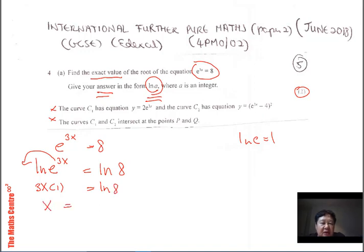So therefore, x is what? The 3 brings over will be ln 8 divided by 3, or 1/3 ln 8. So x is therefore ln 8. This 1/3 will move up here.